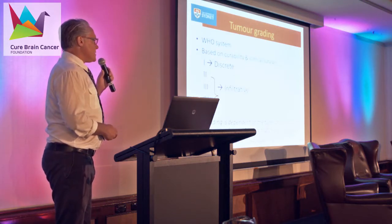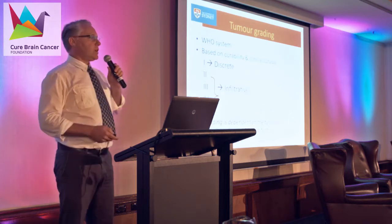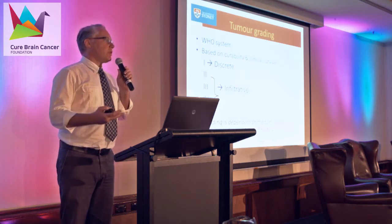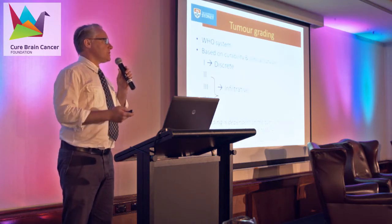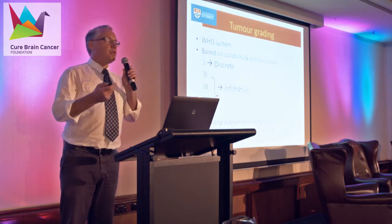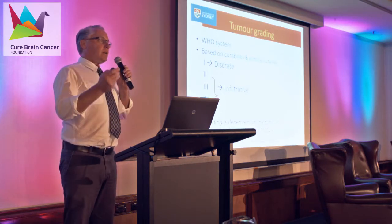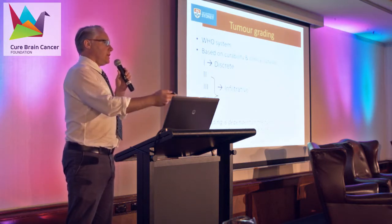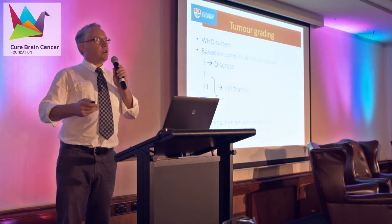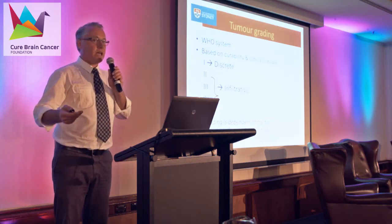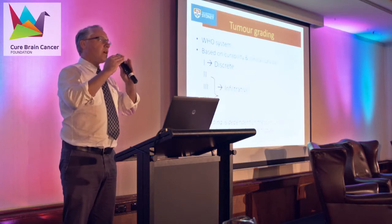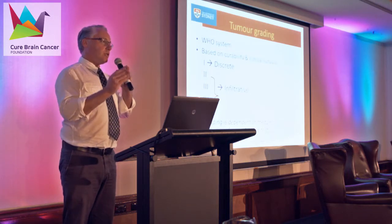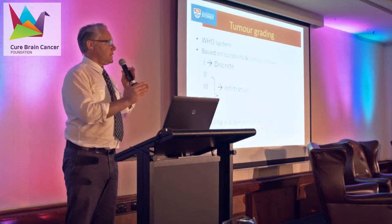The grading is dependent on the tumour type. We look for a variety of morphological features to decide what grade a glioma is. One of those might be the presence of tumour necrosis — areas of the tumour that are dying. In the context of an astrocytoma that has a certain implication; in the context of an oligodendroglioma it has a different implication. So there's a hierarchical approach — you've got to work out what the tumour is first, and then the features to grade that type of tumour are distinct to that type.